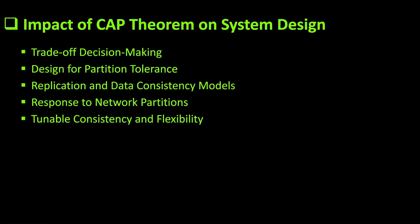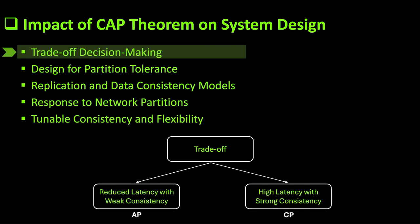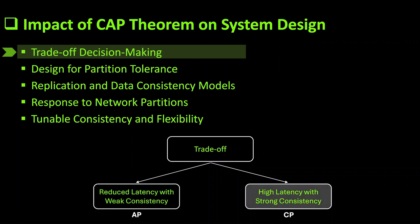Now let's look at the impact of CAP theorem on system design. The first consideration is trade-off decision making. Systems that prioritize availability often opt for weaker consistency models, such as eventual consistency, to ensure low latency and responsiveness even during network partitions — these are AP systems. Systems that prioritize consistency may experience higher latency because they ensure all nodes agree on the latest data before responding to requests. This is critical for applications where data correctness is essential — these are CP systems.